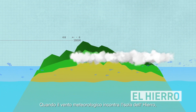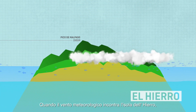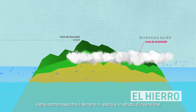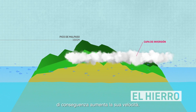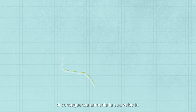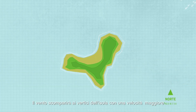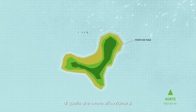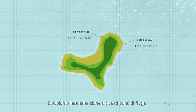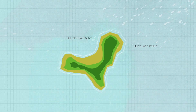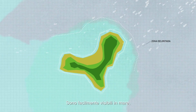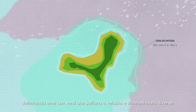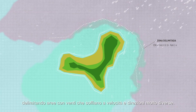When the meteorological wind meets the island of El Hierro, it is compressed between the rising terrain and the inversion layer, with a consequent increase in speed. The wind escapes through its vertices at a higher speed than when it was approaching the island. We must be aware of these outflow points, which are easily visible at sea, delimited by areas with wind blowing in different speeds and directions.